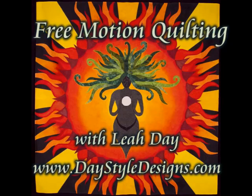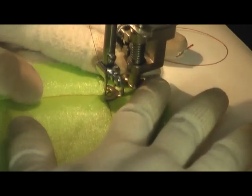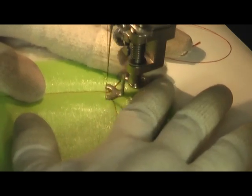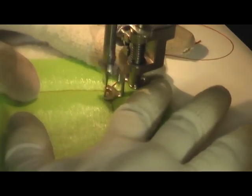This is a free motion quilting tutorial for Pug Eyes. This is created very similar to Echo Shell in the sense that we're going to create a half circle shape.